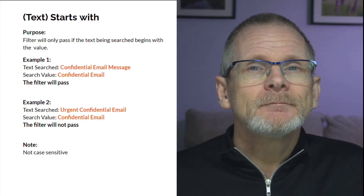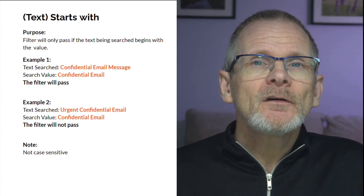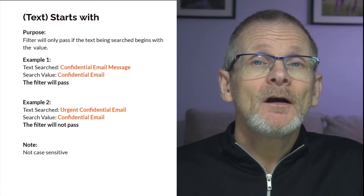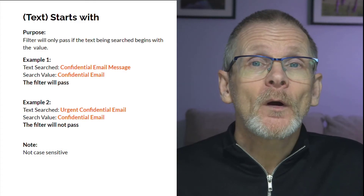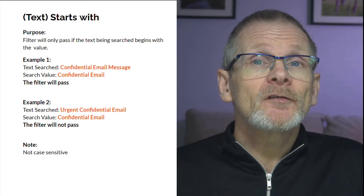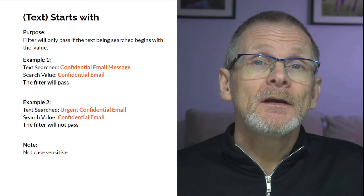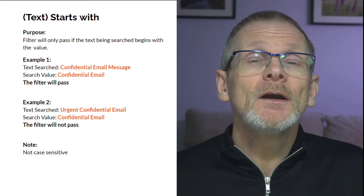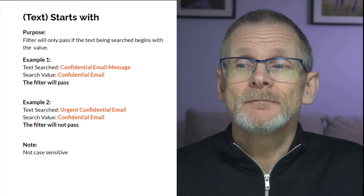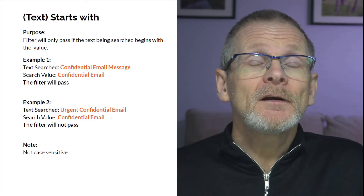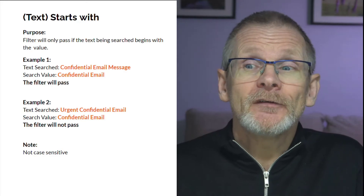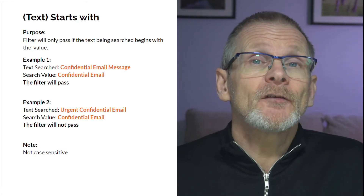'Text starts with' — the filter will only continue if the word or phrase we're searching for is at the beginning of the block of text. In example one, the subject heading says 'confidential email message' and we search for 'confidential email' — the filter passes because that's exactly how the phrase starts. If the subject said 'urgent confidential email' and we searched for 'confidential email', it would not pass because 'urgent' is the first word.